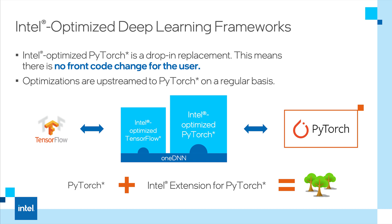For instance, the Intel OneAPI deep neural network library is integrated into the latest versions of PyTorch. Installing and using the Intel extension for PyTorch adds an additional boost in performance. With just a few lines of code, you can use the most up-to-date Intel software optimizations for PyTorch that take advantage of the underlying hardware instructions.